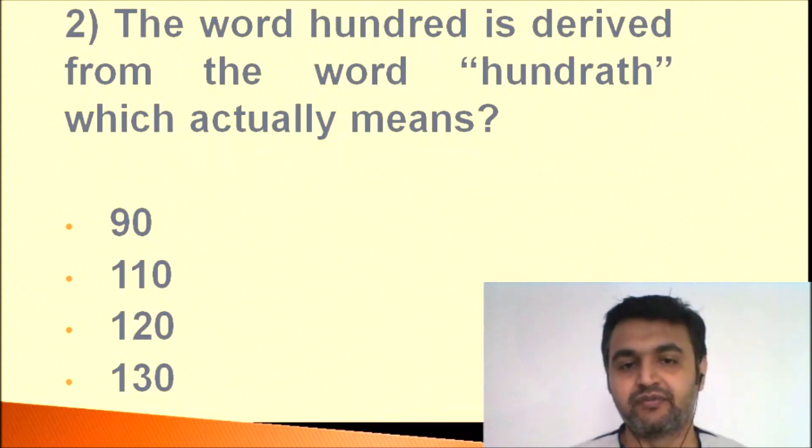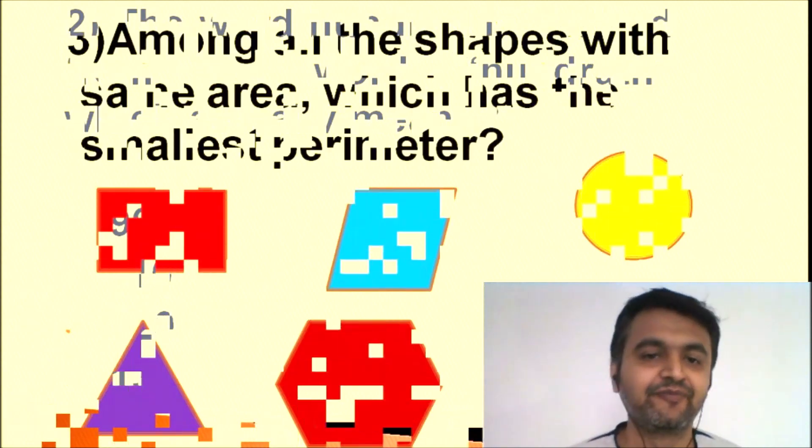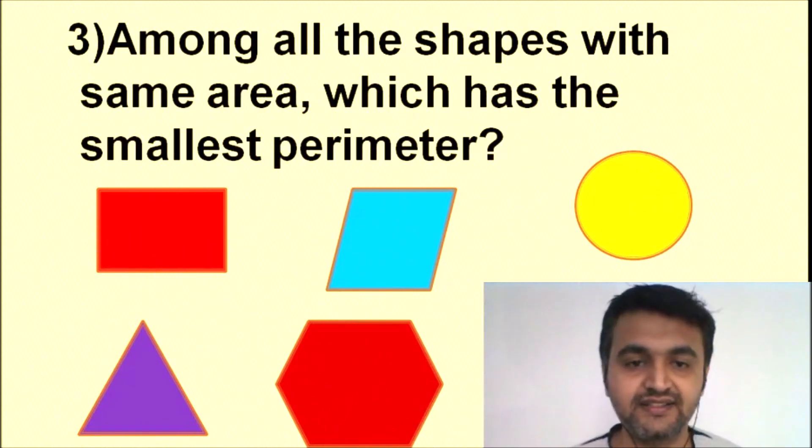The third one is one which I really like. The question seems very easy. Among all the shapes of the same area, which has the smallest perimeter? Perimeter means the sum of the boundaries. You can take rectangle, parallelogram, triangle, hexagon, circle, octagon, star-shaped figure - whatever you take.